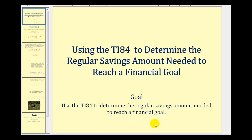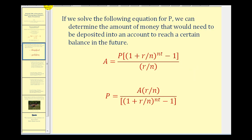Welcome to a lesson on using the TI-84 graphing calculator to determine the regular savings amount needed to reach a financial goal. In the previous video we discussed how we use the value of an annuity formula, solving for P, to determine the regular savings amount to reach a financial goal in the amount of A. So P was the regular savings amount and A was the financial goal. However, for this video we'll show how we can use the financial feature of the graphing calculator to answer these questions quickly.